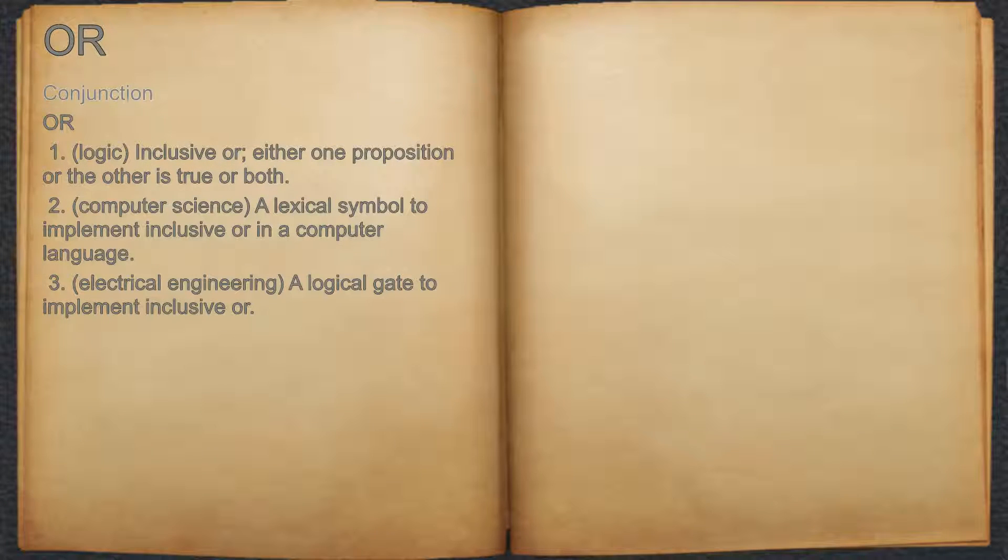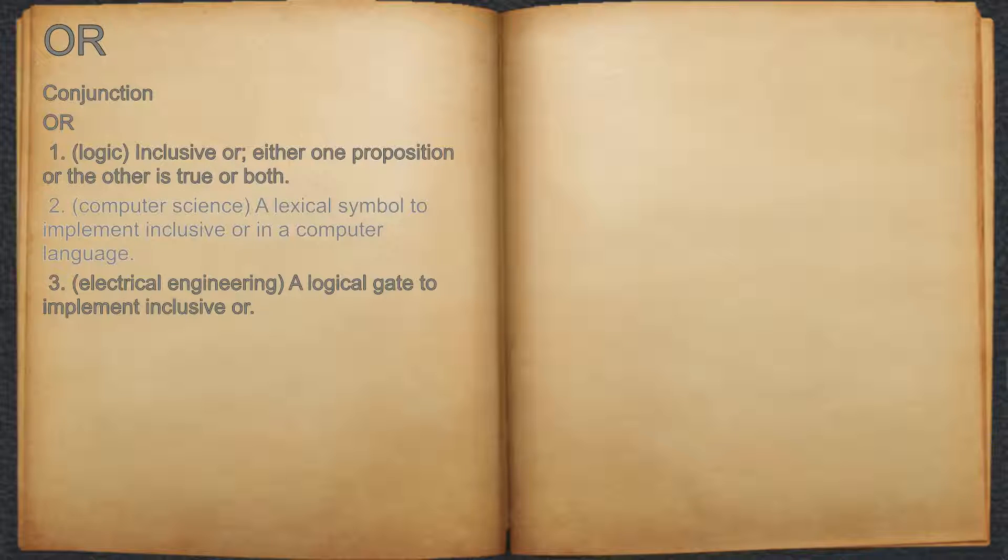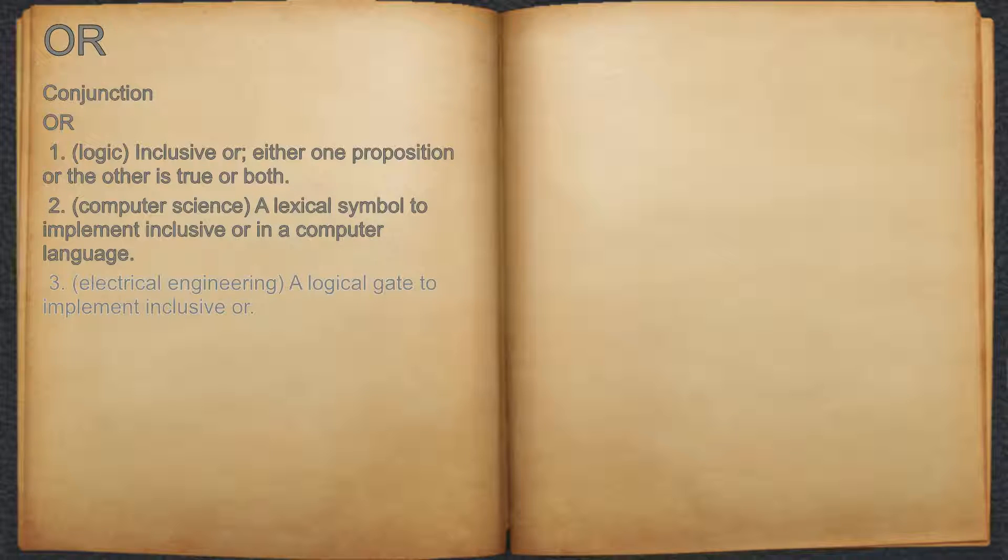OR, conjunction. 1. Logic: inclusive or, either one proposition or the other is true or both. 2. Computer science: a lexical symbol to implement inclusive or in a computer language. 3. Electrical engineering: a logical gate to implement inclusive or.